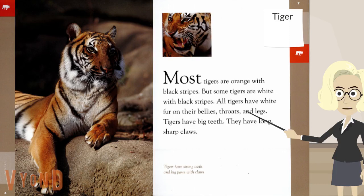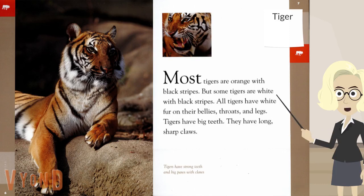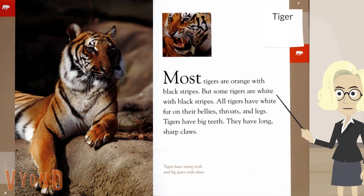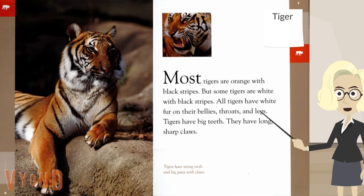Readers, I want you to try this. This page seems to be mostly about describing what the tiger looks like. I want you to do a quick skim of the page and jot down some of the keywords that you might use when you talk.